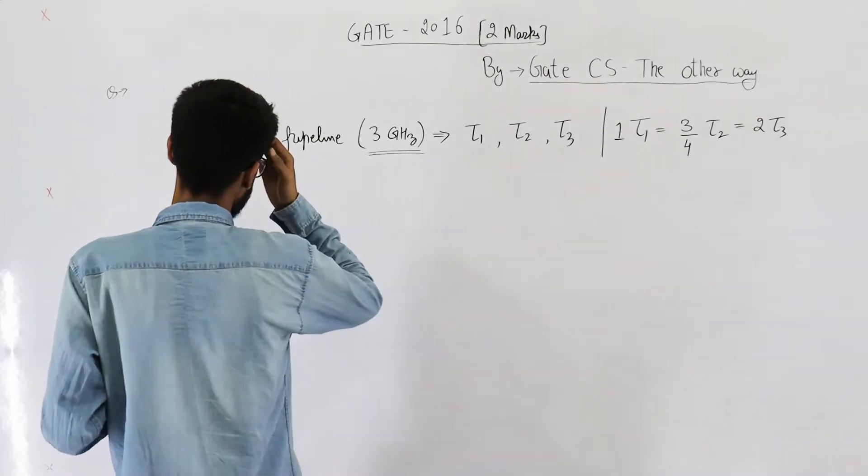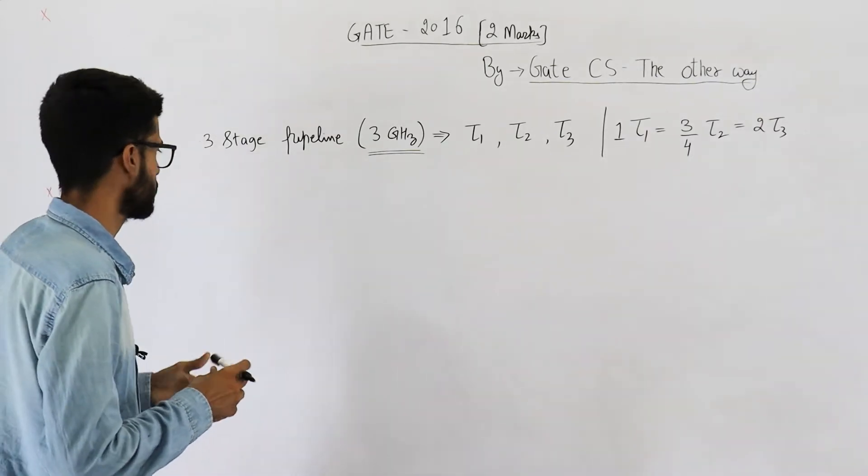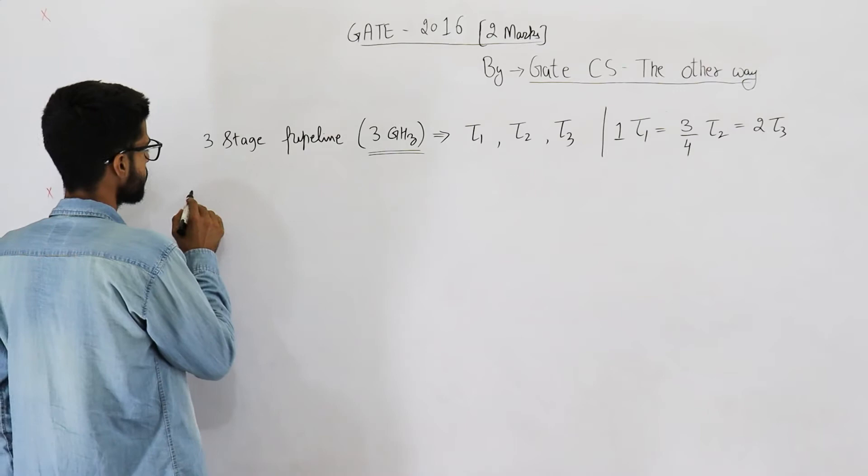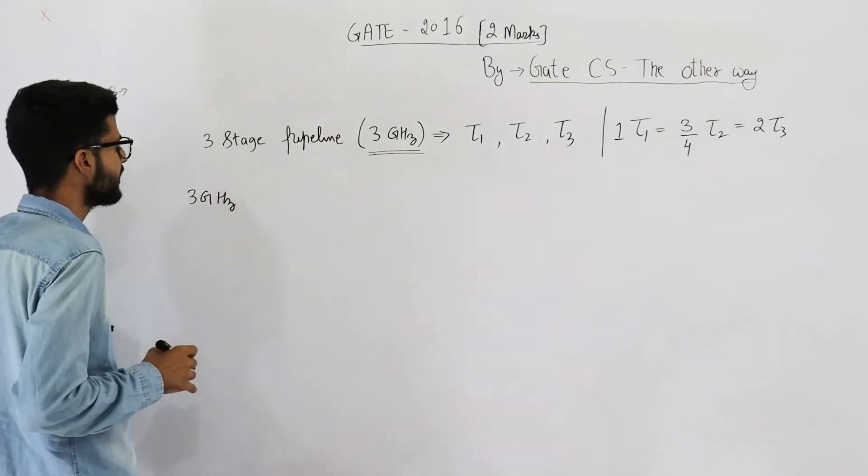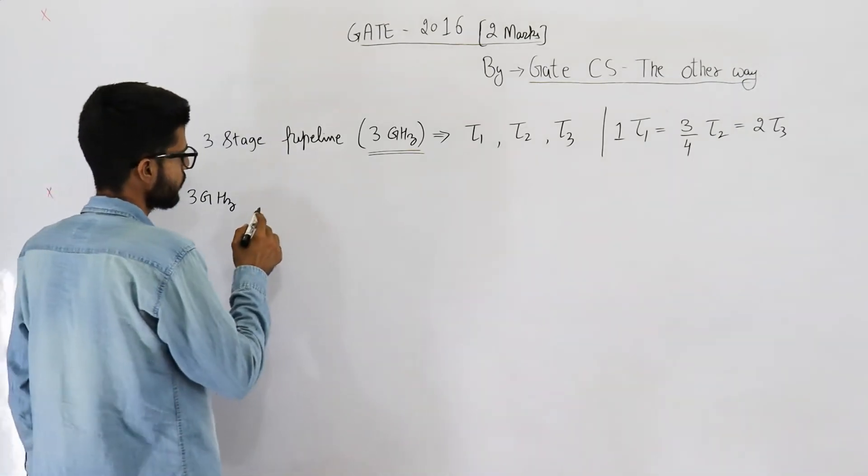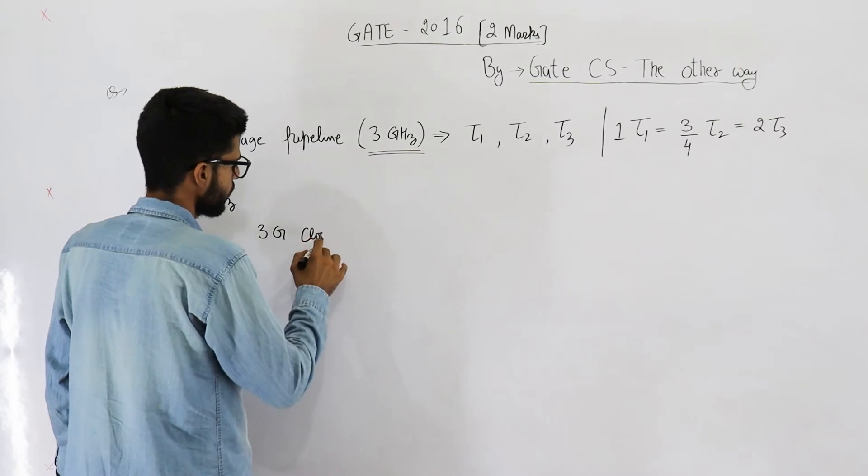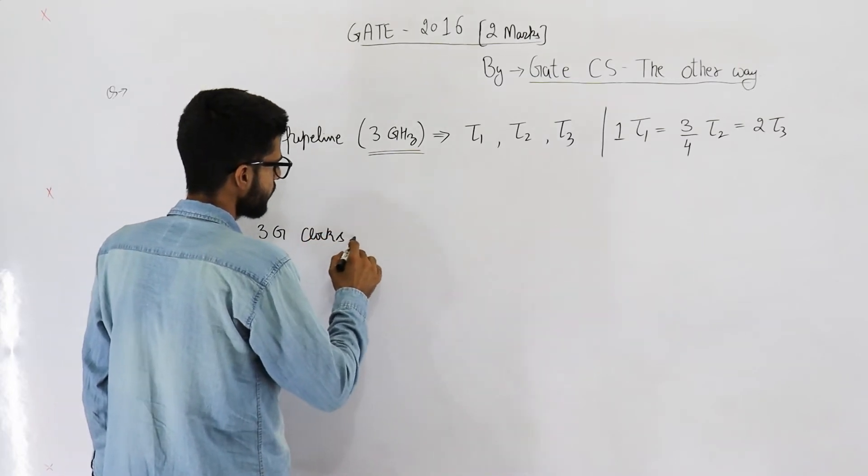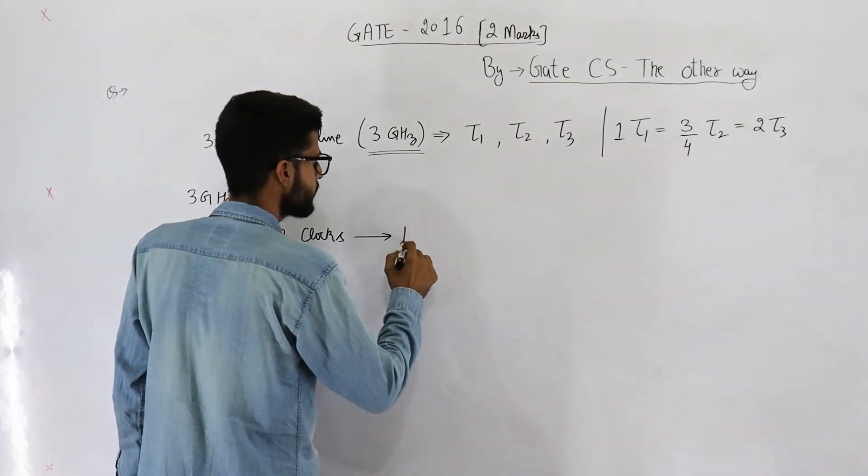They have given that the frequency of processor is 3 GHz. 3 GHz means 3 GHz clocks per second. Hertz means clocks per second. That means 3 GHz clocks are generated in every second.